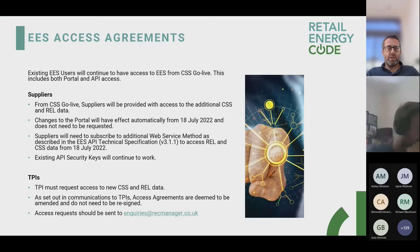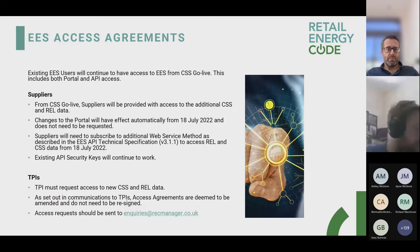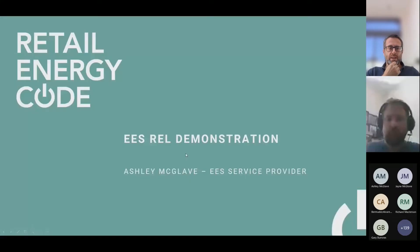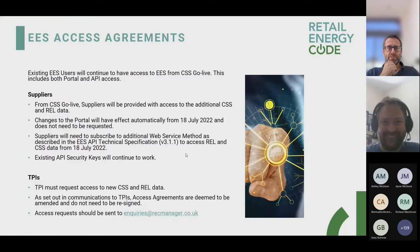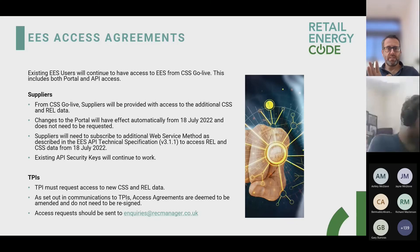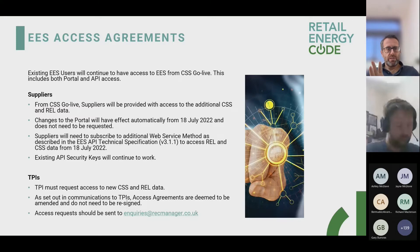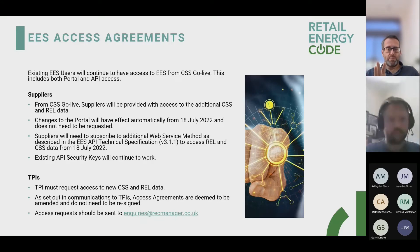For suppliers who access the API, you'll have security keys and those security keys will continue to work — noting there is a different approach for GES but for EES the security keys are staying the same. For TPIs — including price comparison websites — TPIs must request access to the new CSS and REL data, both those with web portal access and those using the API. RECO has written to TPIs to explain that approach.